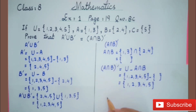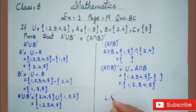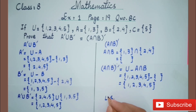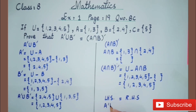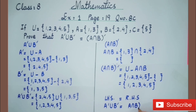You can see: the left-hand side, which is A complement union B complement, equals the right-hand side, which is A intersection B whole complement. Proved.